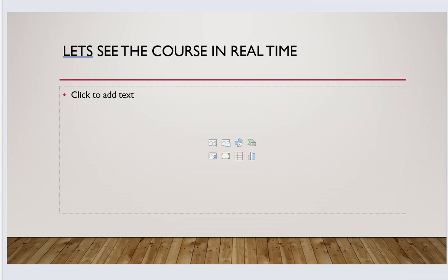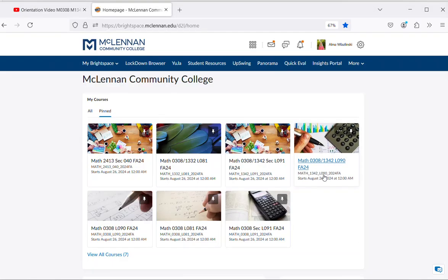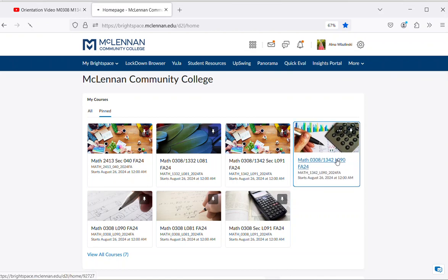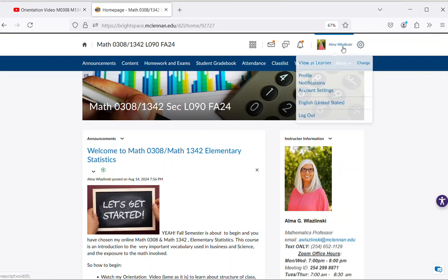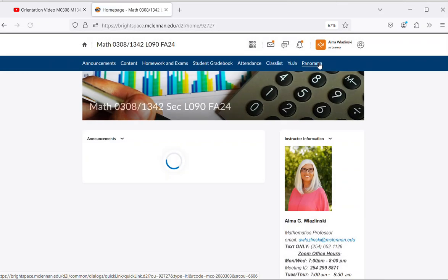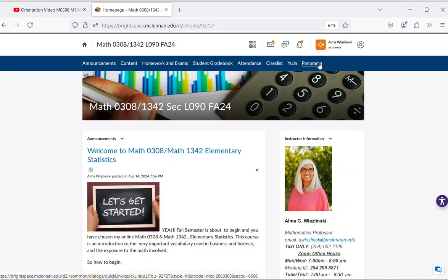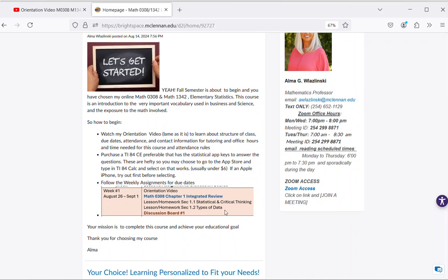Let's look at the course in real time. Here we go. I've already signed in, and we're doing 90, so I click on this, and I'm going to change to learner so you can see it. The first thing I want you to see is the fact that there is my announcement and welcome. On it I have bullets. Notice I put what the first week will be, what you're responsible for. Notice the orientation video is one of them, then the integrated review, that's your Math 308, that's just basic fractions. You can just click the help me button. Then the two lessons of the college level and one discussion board.